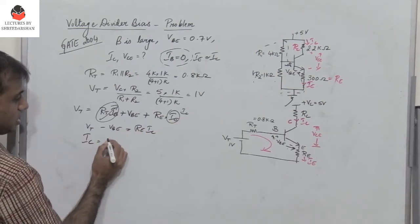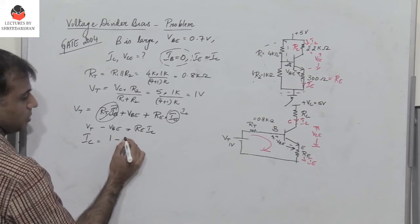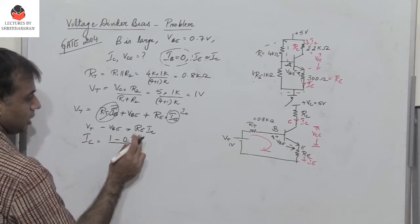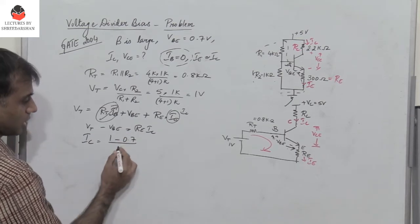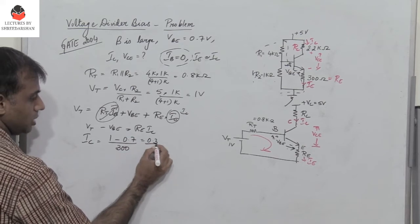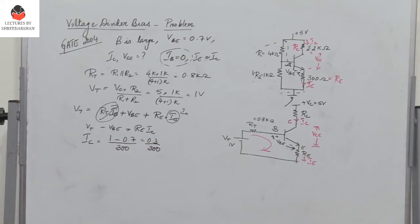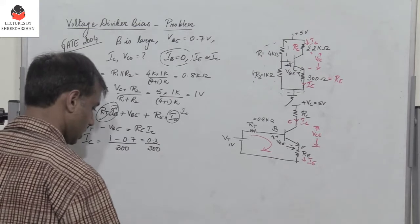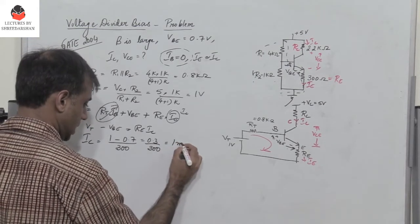So what is Ic? Ic is Vt, which is 1, minus Vbe, which is 0.7, divided by Re. Re is 300, so I get 0.3 divided by 300. The value of Ic is 1 milliampere.